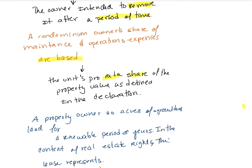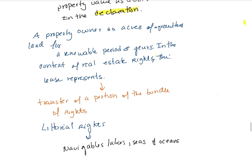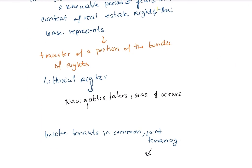A condominium owner's share of maintenance and operation expenses is based on the unit's proportional share of the property value as defined in the declaration. A lease represents the transfer of portions of the bundle of rights from the property owner to the tenant.